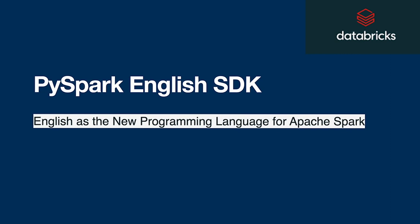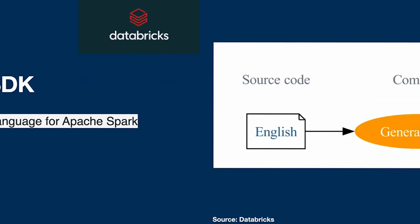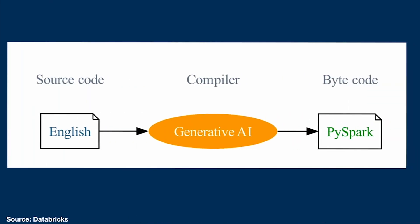English is used as the natural programming language for Apache Spark. Let's see how it works: the user writes source code in English, and a compiler is generated that converts it into PySpark bytecode.